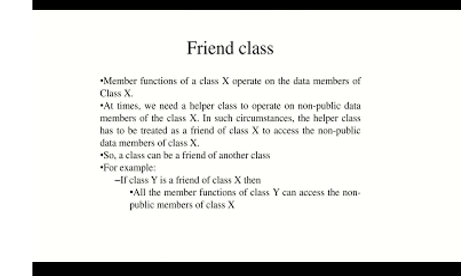Welcome back. Today we shall discuss friend class in C++. In our previous video we discussed friend function, using which we were able to access the private data members of a class. Similarly, with friend class — say we have a class with some private data members, and another class with a function that wants to access those private members. Friend class comes in handy for this, allowing us to access another class's private data members.